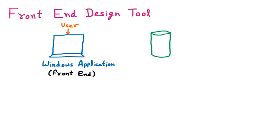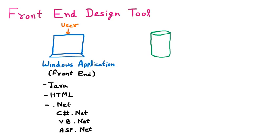Now all the languages which we are learning — just like Java, HTML, CSS, or .NET — are used to design the front end. We know that .NET is a framework, and under .NET we are having multiple languages such as C# .NET, VB .NET, ASP .NET, and J# .NET. So there are multiple languages supported with .NET. Java, HTML, CSS, .NET — all these languages are designing the front end.